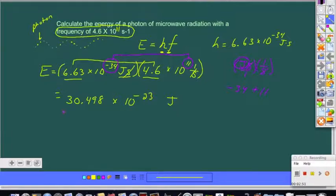Now in proper scientific notation, and with sig figs taken into consideration, 2 sig figs times the value of 3 sig figs, we're going to leave 2 in our answer. So 3.0 times 10 to the negative 22 joules.